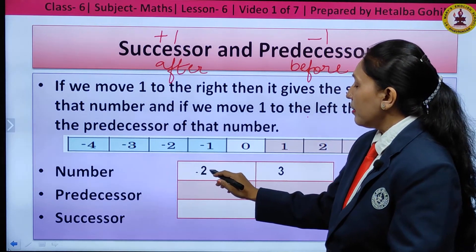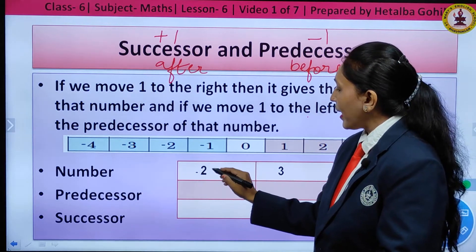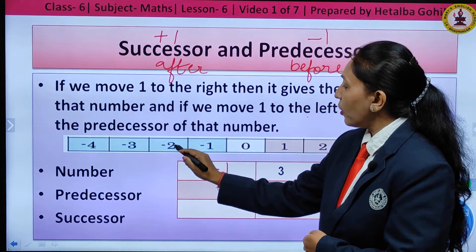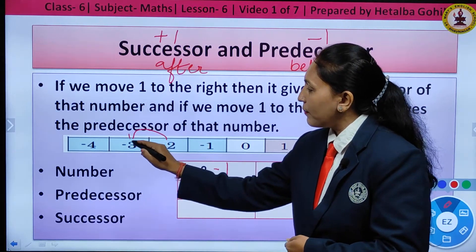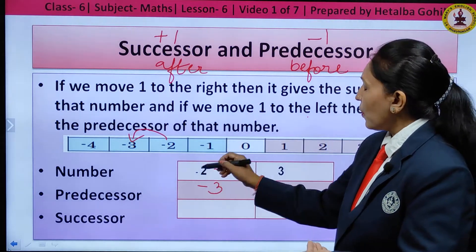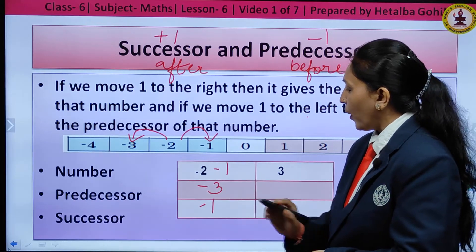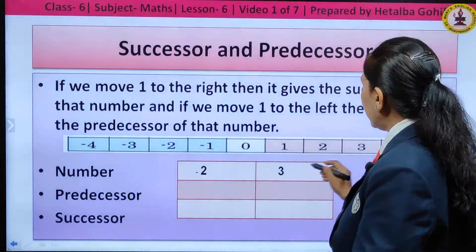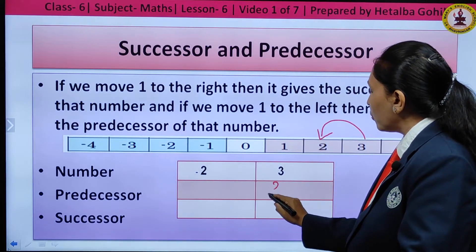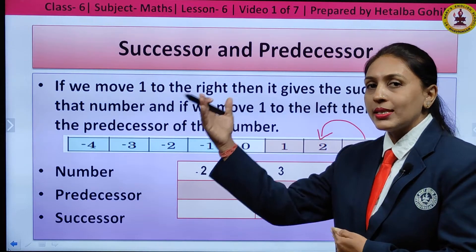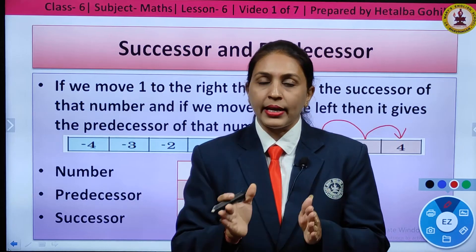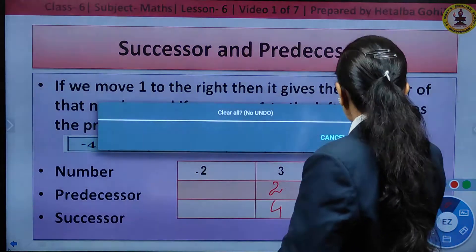For example, taking minus 2: if I want the predecessor, I move 1 step to the left, so the predecessor of minus 2 is minus 3. If I want the successor of minus 2, I move 1 step to the right and get minus 1. For 3: moving 1 step to the left gives predecessor 2, and moving 1 step to the right gives successor 4. You can also simply add 1 or subtract 1 to get the successor and predecessor.